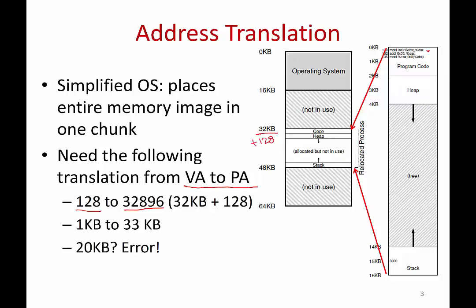So the CPU will say fetch address 128, but you want a translation to happen to something else. Similarly, if the CPU says fetch whatever is at 1 KB, you want the memory hardware to actually fetch from 33 KB. And if the CPU says fetch something at 20 KB — which is way beyond the address space of the process — you want the memory hardware to say sorry, you are beyond your means. You don't want to fetch something from beyond the address space of the process. So you need these translations to happen.